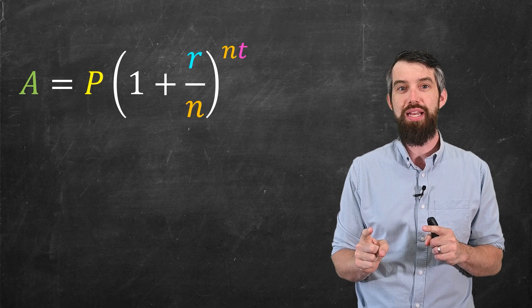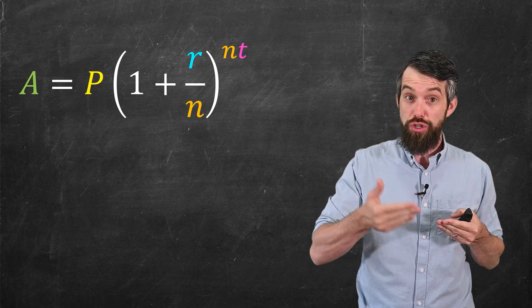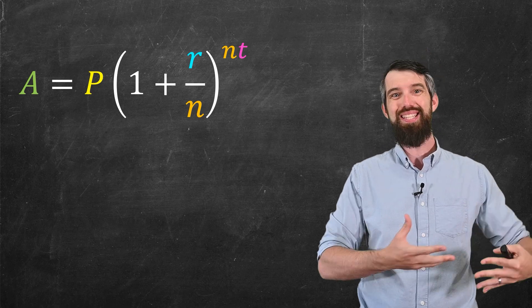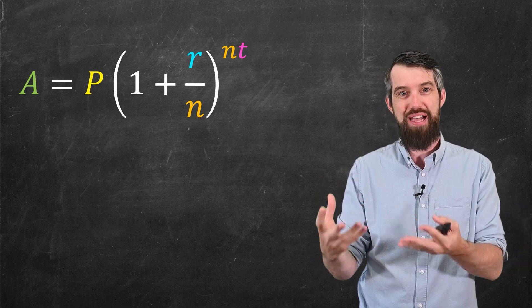So then this sort of begs the question, well, what happens if I increase my frequency of compounding as much as possible? Now what we saw in our example was that when you made the value of n larger and larger and larger, the amount got bigger and bigger and bigger, but it seemed to be slowing down how fast it was growing.